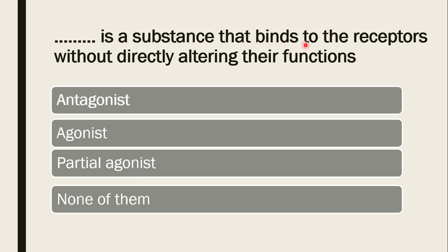Next question: a substance that binds to the receptor without directly altering its function — is it antagonist, agonist, partial agonist, or none of them? The correct answer is antagonist. An antagonist has affinity to bind the receptor but cannot alter its function — it has no intrinsic activity.